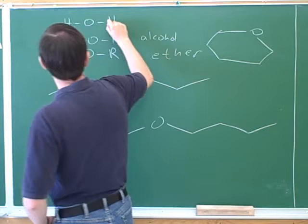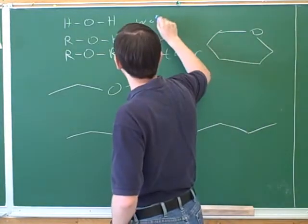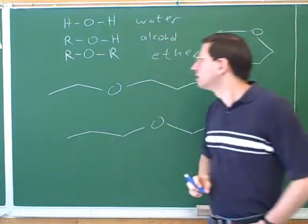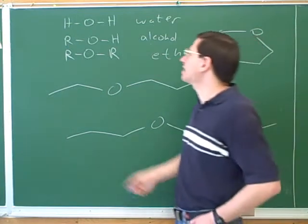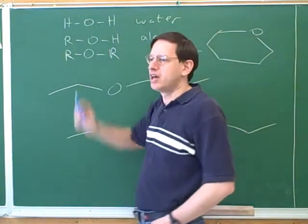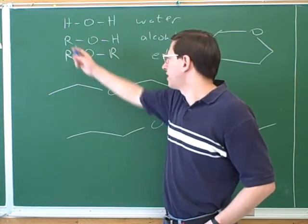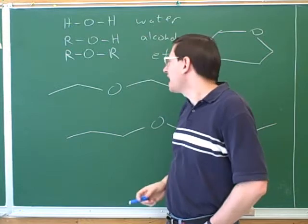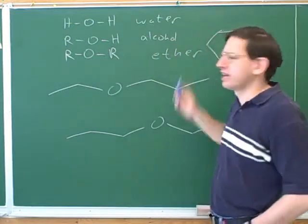And for completeness, do you know what the name of this molecule is? That's just water. It's helpful to have all of these functional groups together in your notes so we can see the connection between them. Oxygen generally forms two bonds. If the oxygen is bonded to two hydrogens, that's just water. If it's bonded to one hydrogen and one alkane carbon, that's an alcohol. And the only other possibility is when the oxygen is bonded to two alkane carbons, and that's an ether.